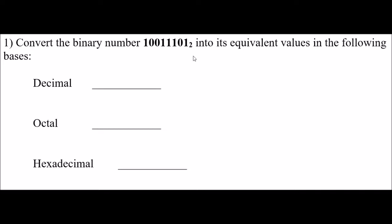So here in this example, I'm starting with a binary number. I can tell it's binary because I have a little 2 right there — it's binary, base 2. So maybe I'll copy it over underneath. This is my base 2 or binary number: 1, 0, 0, 1, 1, 1, 0, 1.